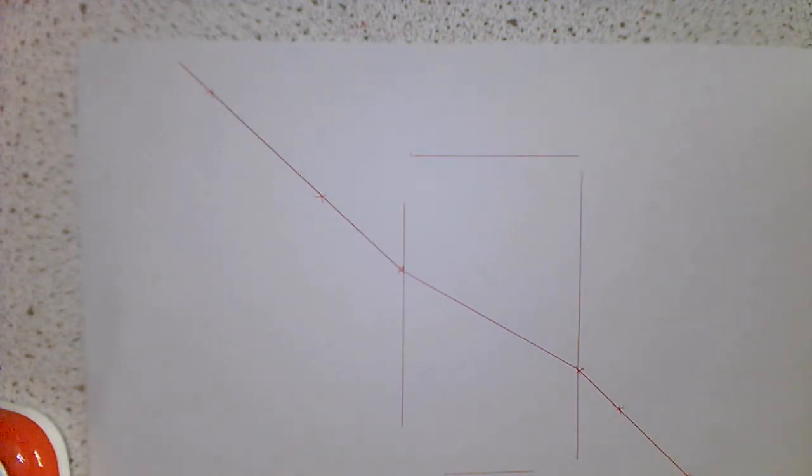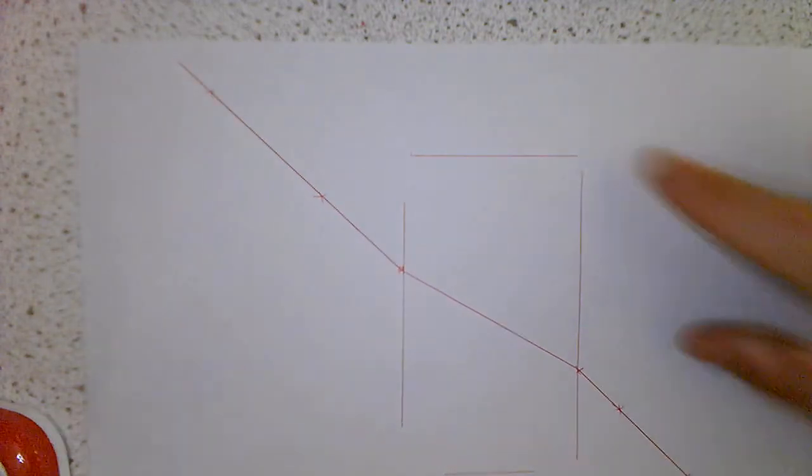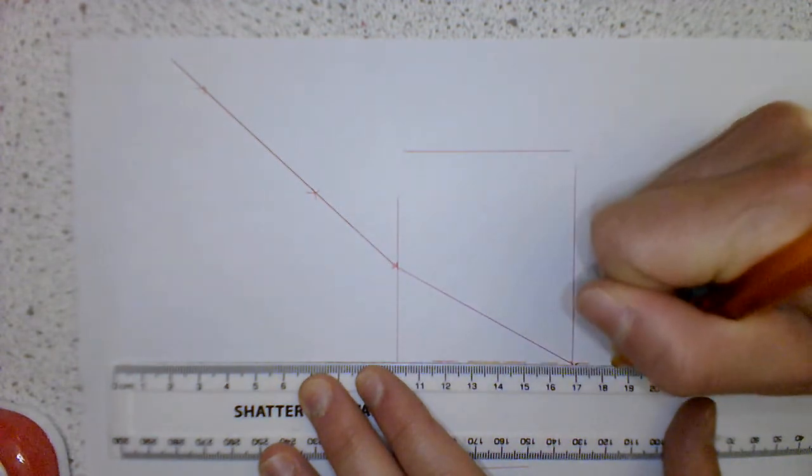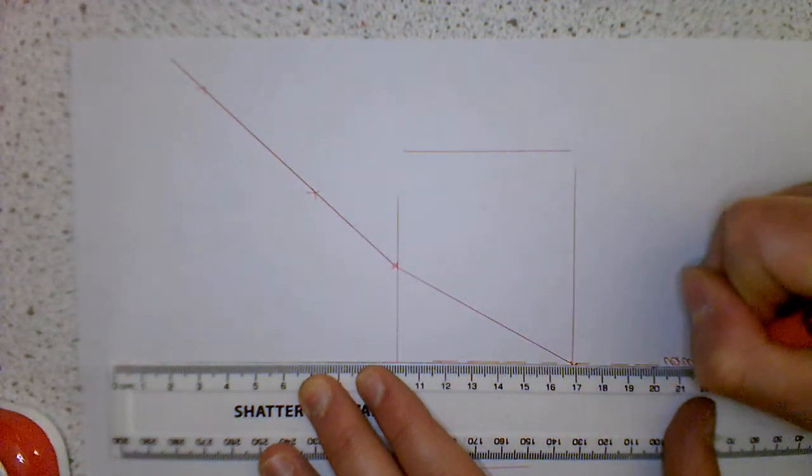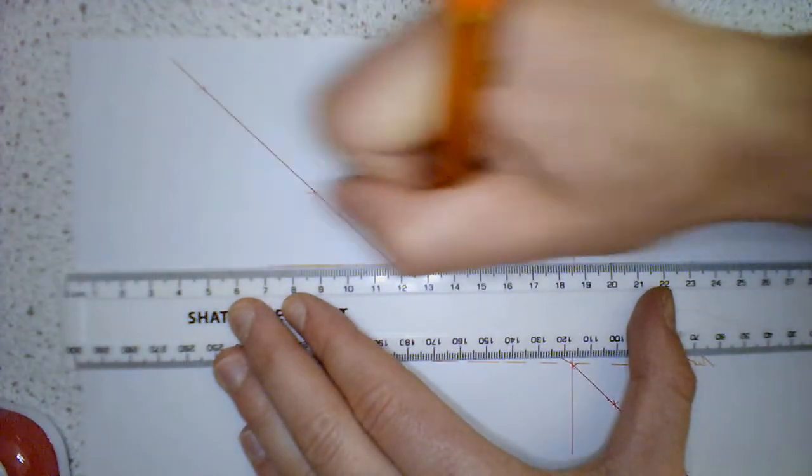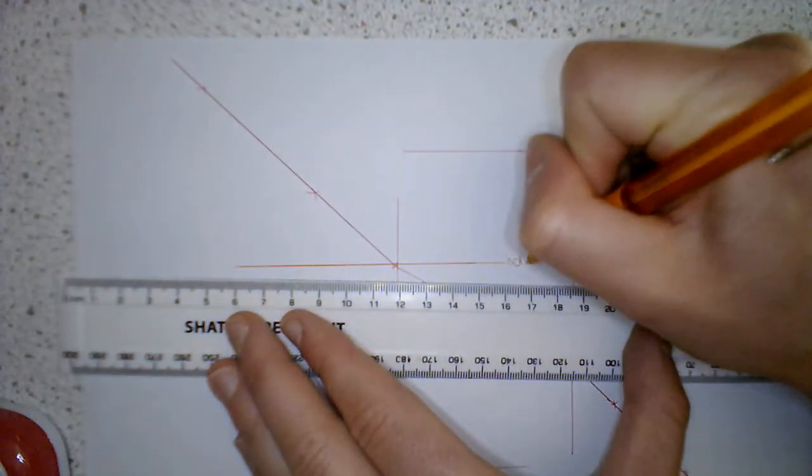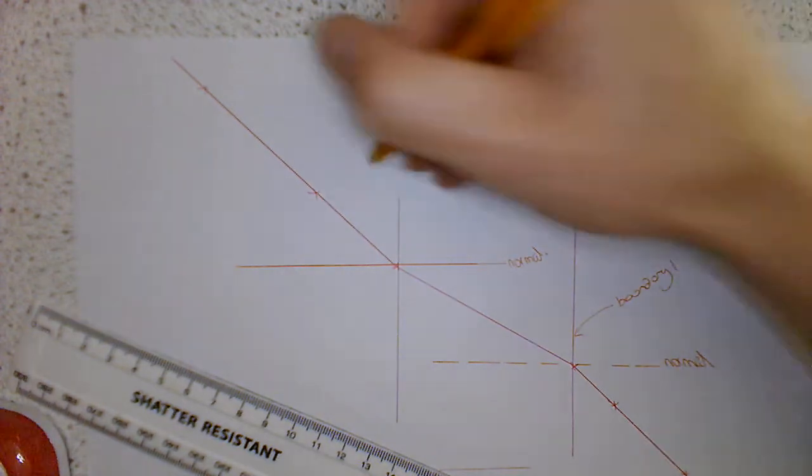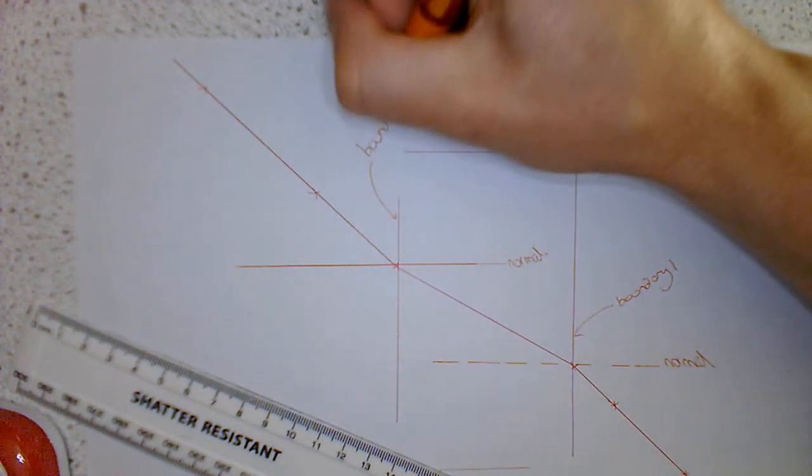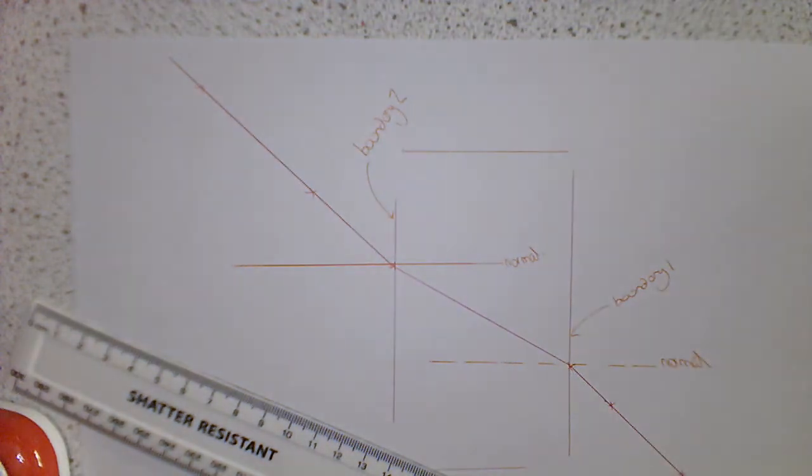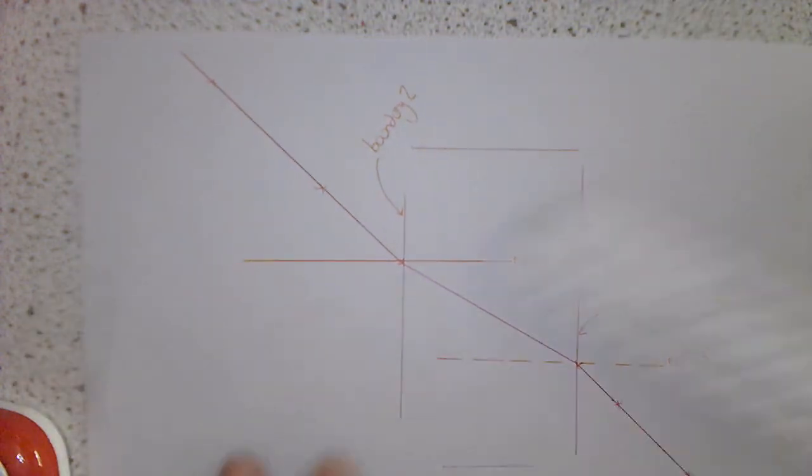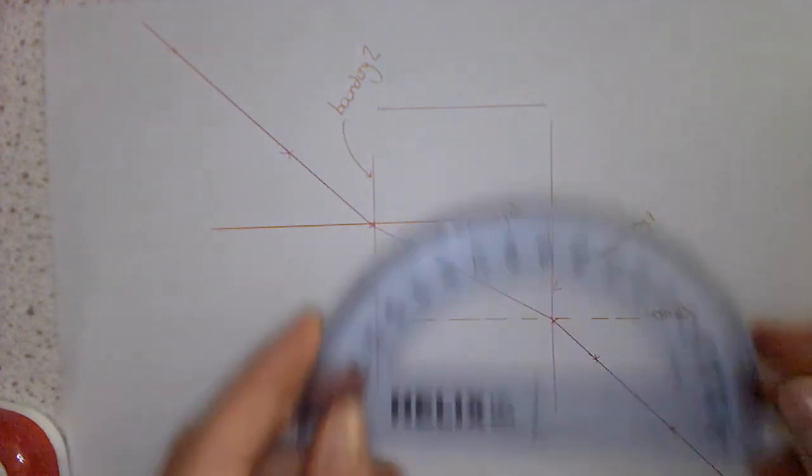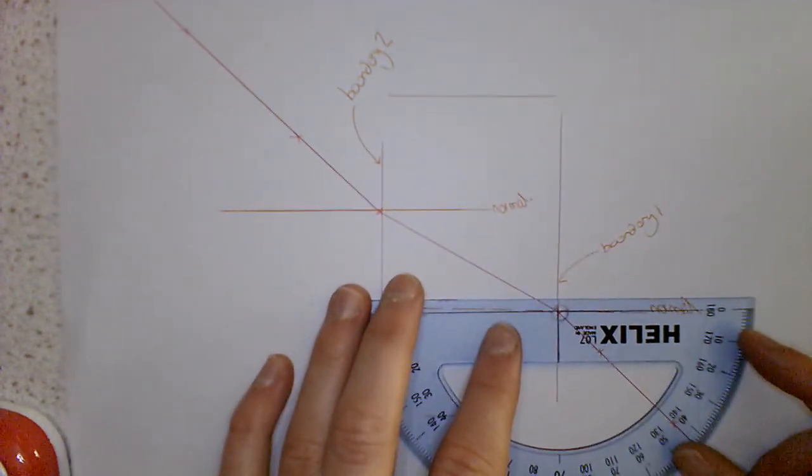So all angles in optics are always measured to the normal. So I'm going to sketch some normal lines in. So this is our first normal. This is our second one. So again let's just label that. So this is our first boundary. So I'll call that boundary one. This is our second boundary. So I'll call it boundary two. So what we've got is the complete path of light all the way through our glass block. And what I'm going to do is I'm going to measure the angle of incidence at the first boundary.